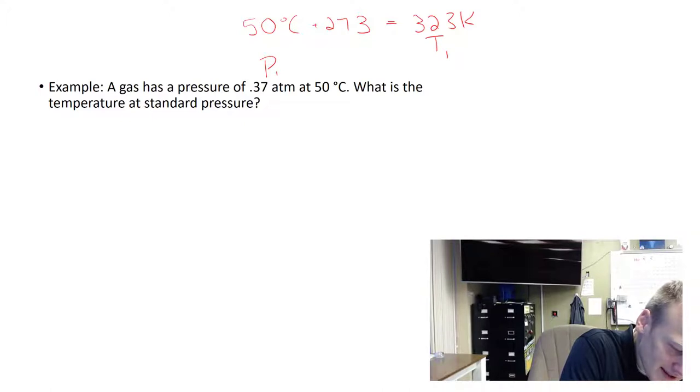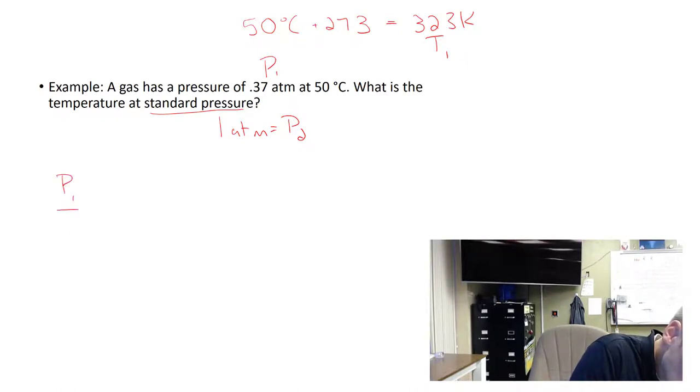What is the temperature at standard pressure? If you recall, standard pressure is 1 atmosphere. So P2 in this case would be 1 atm. So now we got P1 over T1 equals P2 over T2, and we can start filling out our equation. 0.37 over 323 equals 1 over T2.